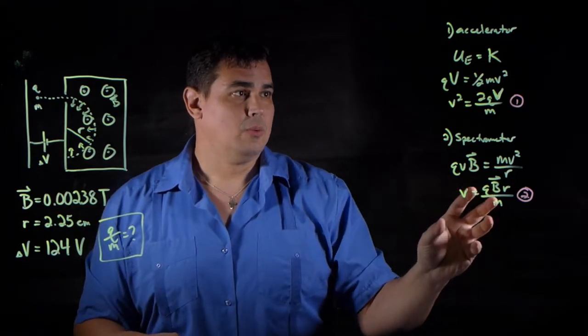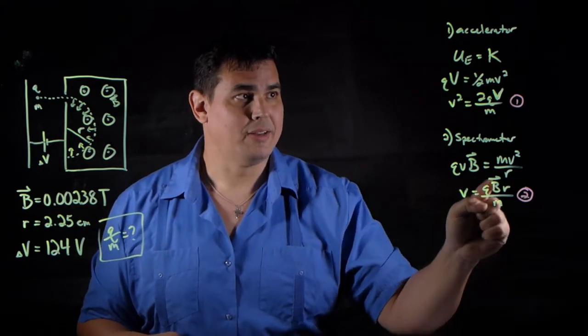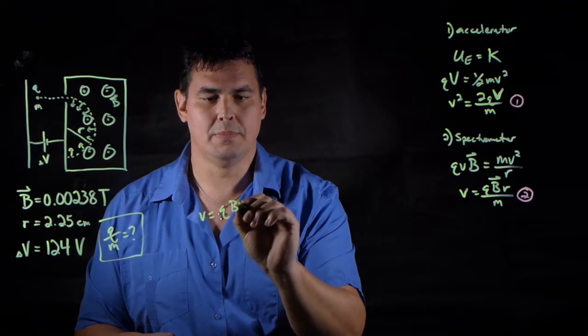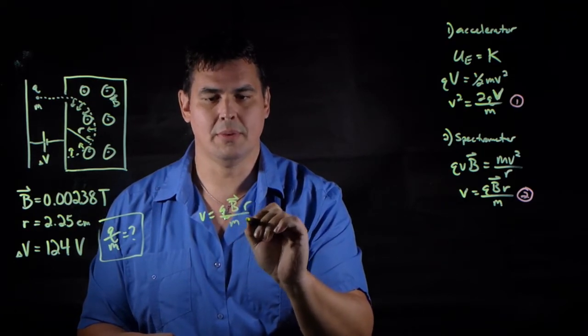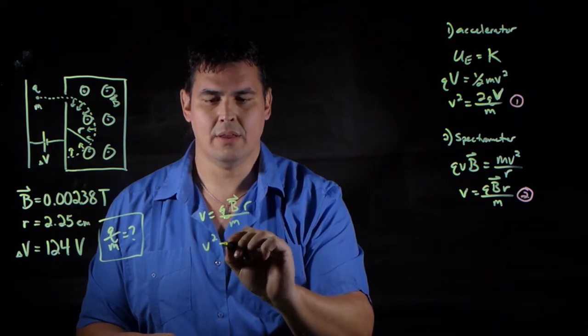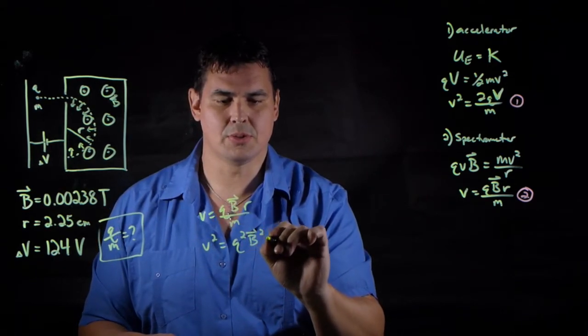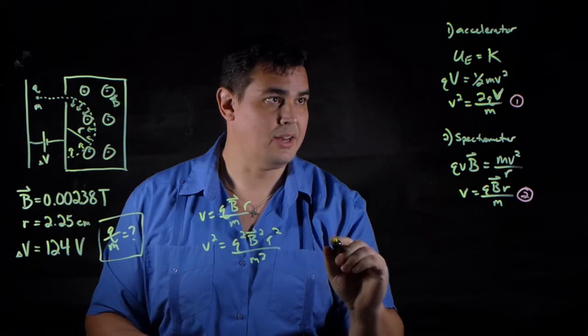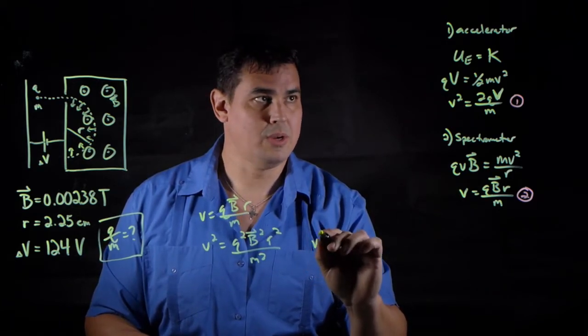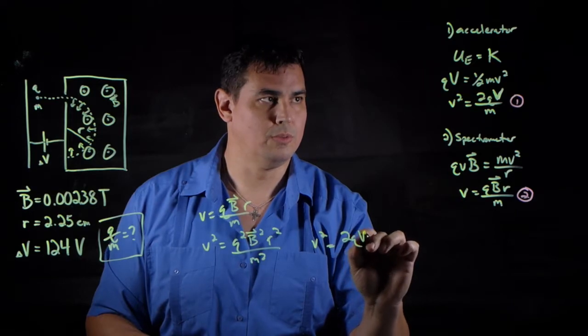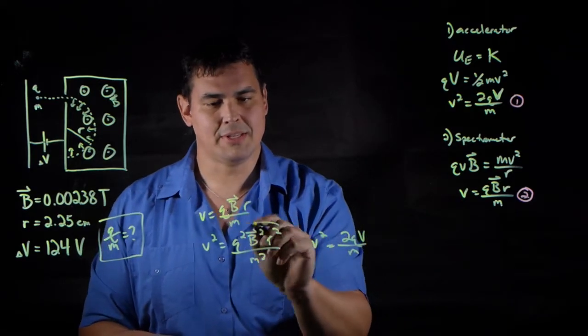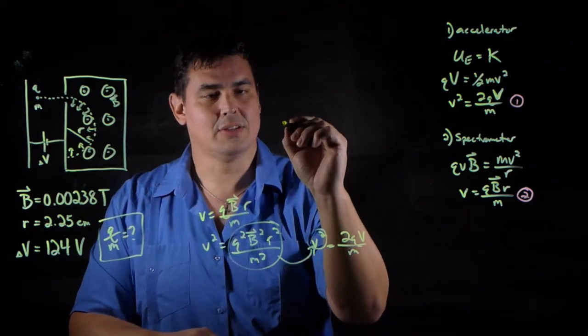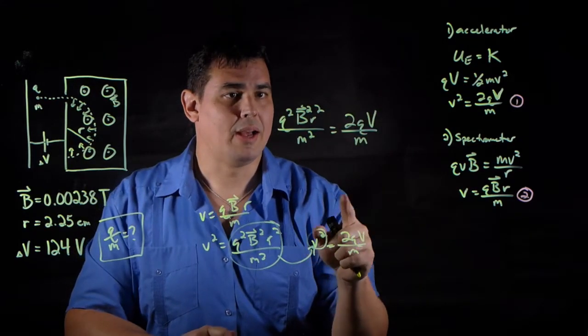What I can do now, I'll take this one and square it, then I can plug it in up there. Let's take this equation, v equals qBr over m. So if I square that, I get v squared equals q squared B squared r squared over m squared. Now I'm going to take this v squared equals 2qV over m, and I'm going to plug it in for this.